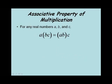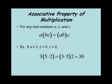Now let's look at the associative property of multiplication. For any real numbers a, b, and c, a times (b times c) equals (a times b) times c. Whether we multiply the second two first then the first, or the first two then the third, we get the same answer. With a equal 3, b equal 5, c equal 2: 3 times (5 times 2) is 3 times 10, which is 30; and (3 times 5) times 2 is 15 times 2, which also equals 30.